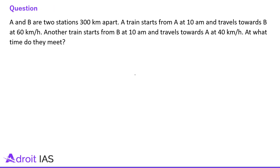Question number 1: A and B are two stations 300 km apart. A train starts from A at 10 AM and travels towards B at 60 km per hour. Another train starts from B at 10 AM and travels towards A at 40 km per hour. At what time do they meet?